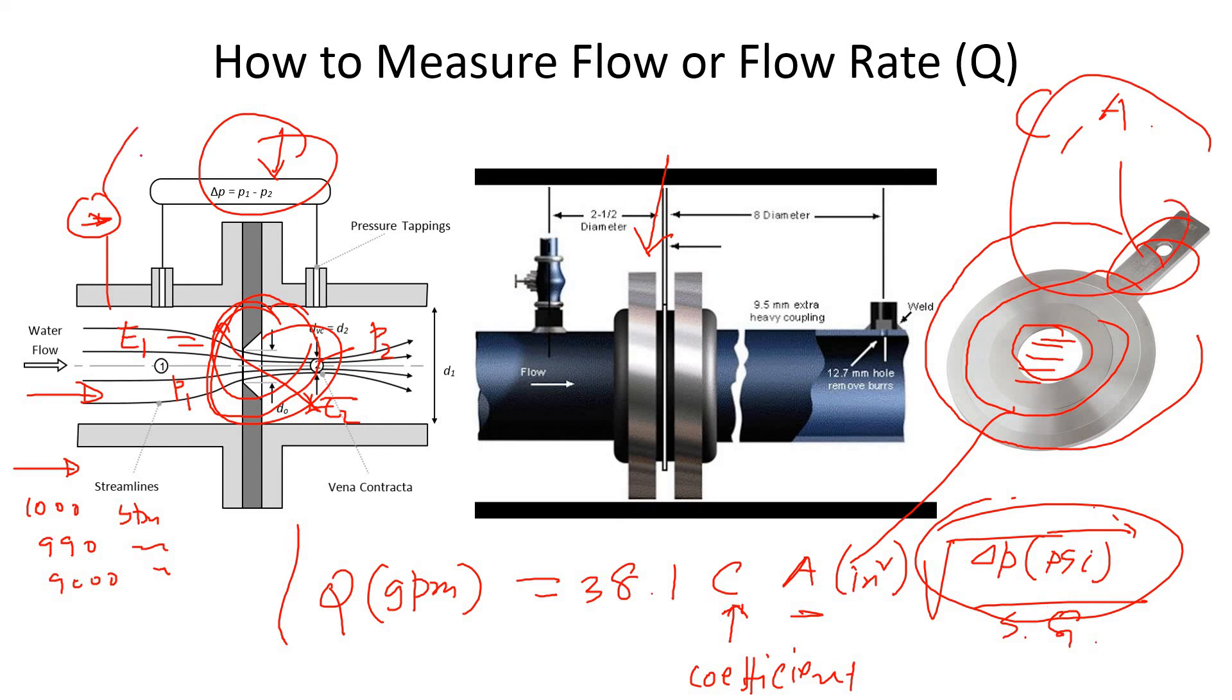All you need to do is set up two pressure gauges before and after the orifice and calculate the flow rate.